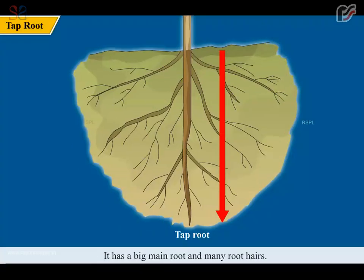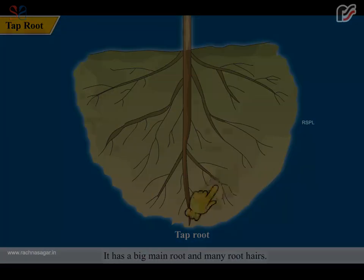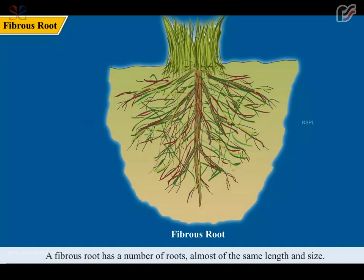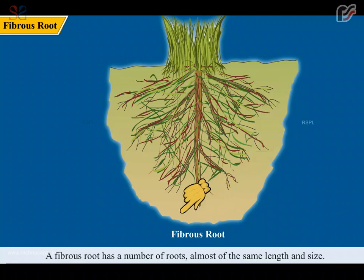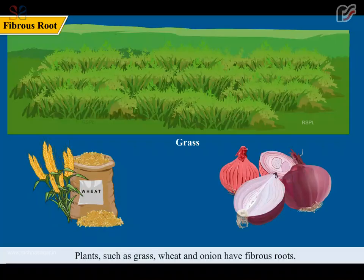A taproot grows deep into the soil. It has a big main root and many root hairs. Plants such as peas, beans and rose have taproots. A fibrous root has a number of roots almost of the same length and size. Plants such as grass, wheat and onion have fibrous roots.